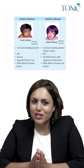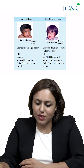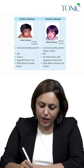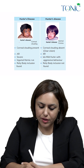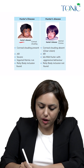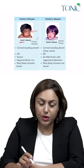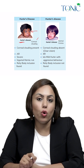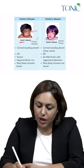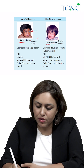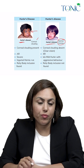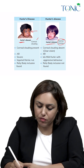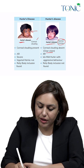In Hurler disease, corneal clouding is present — you can see the patient having corneal clouding. But in Hunter disease, the cornea is normal, with no clouding; patients have clear vision.